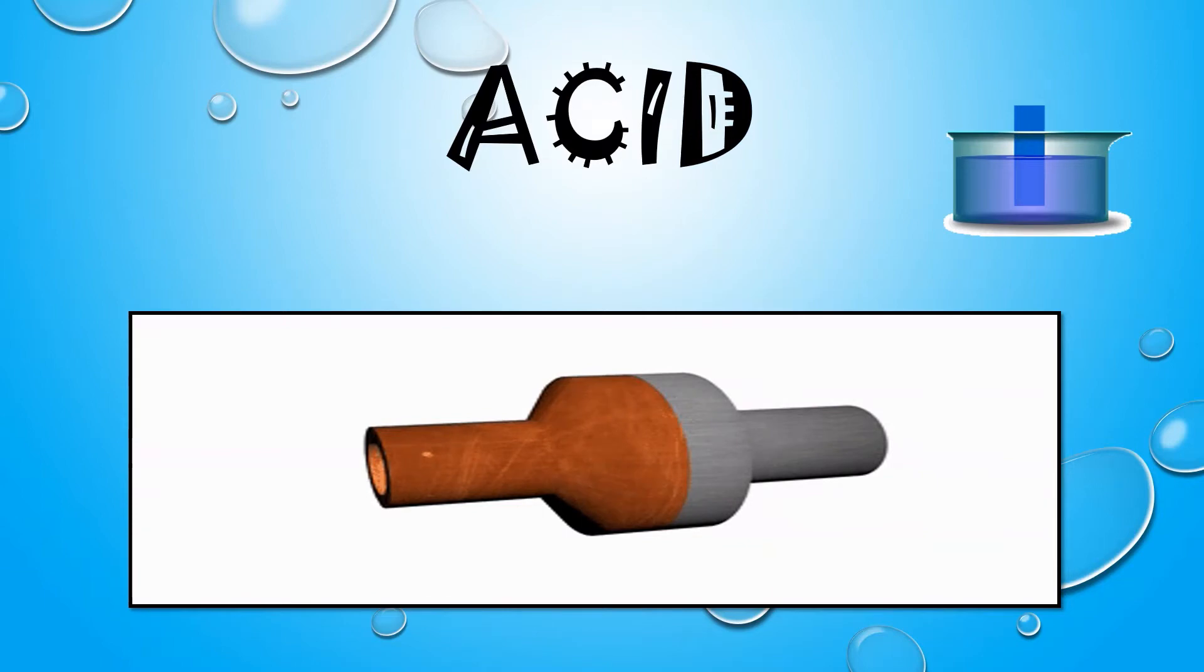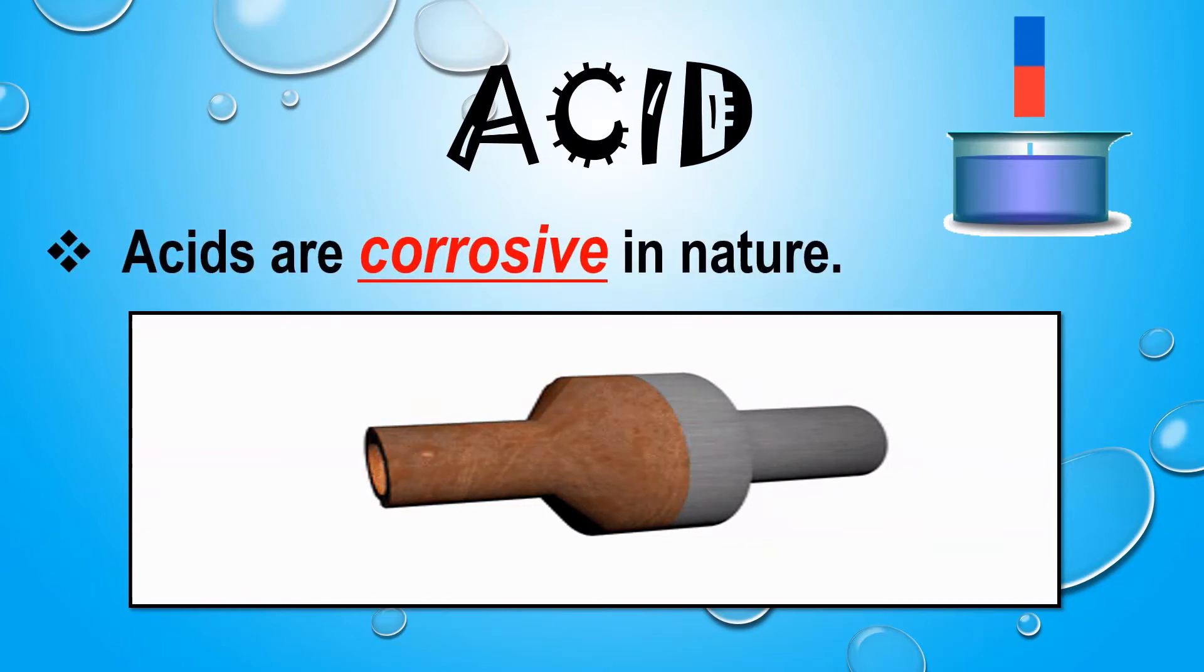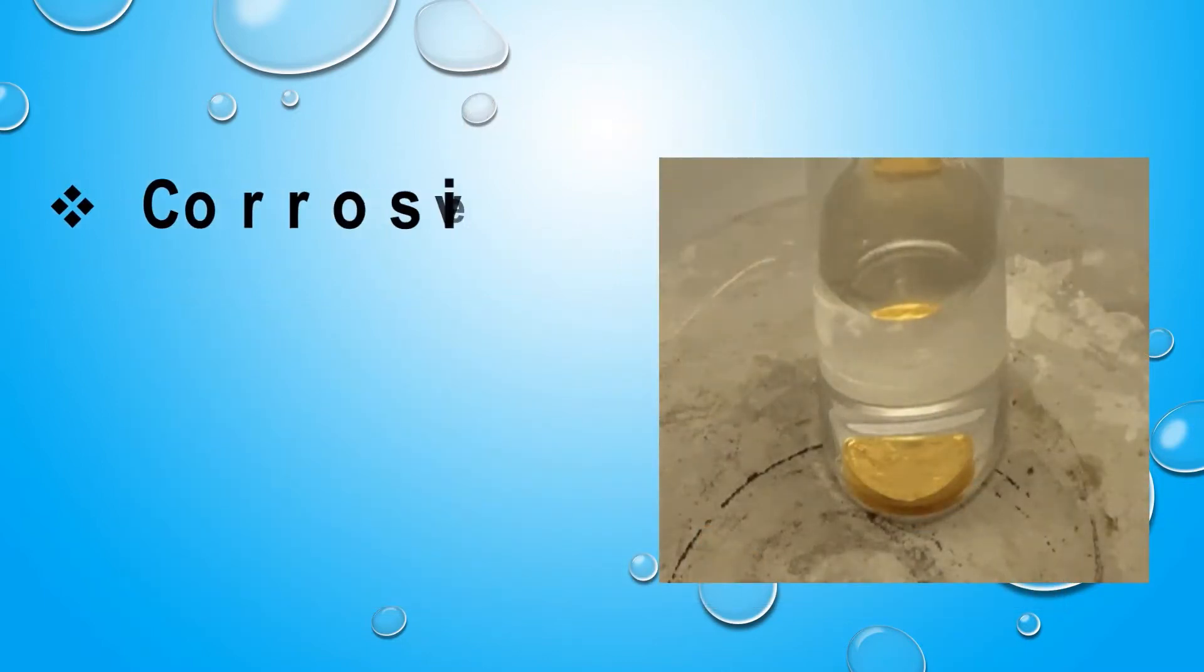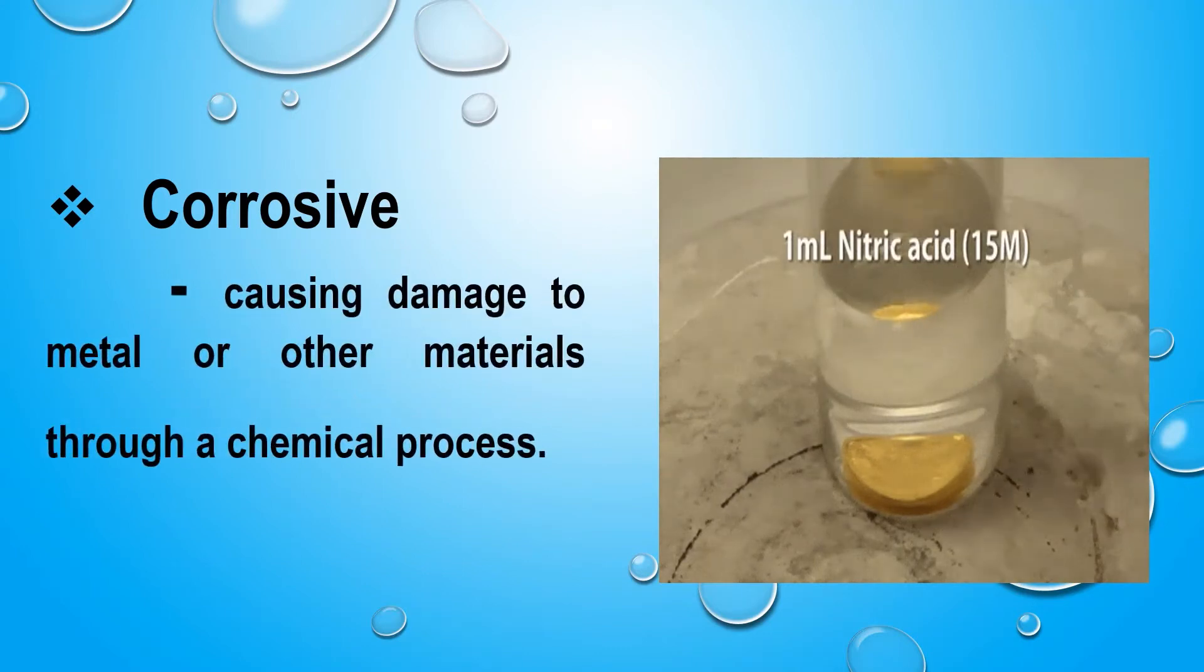Here are some properties of acid. First, acids are corrosive in nature. When we say corrosive, it damages any metal or any other materials through a chemical process.